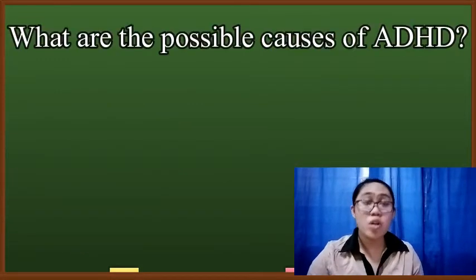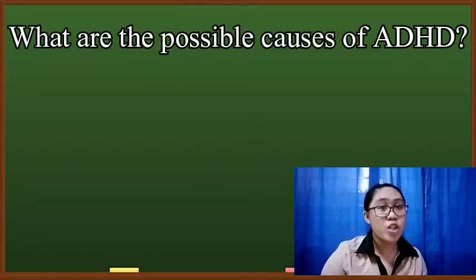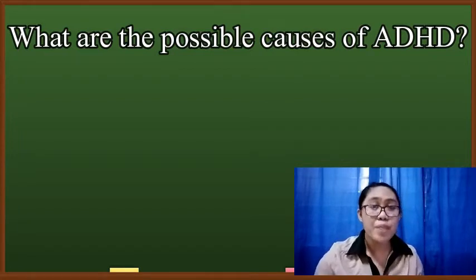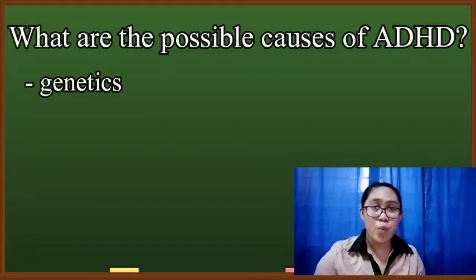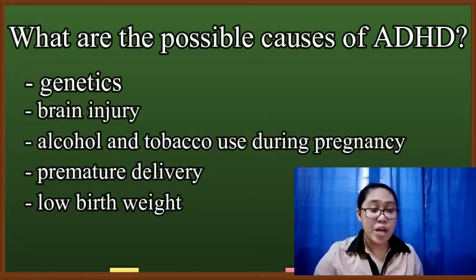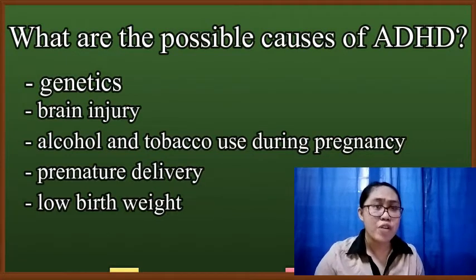What are the possible causes of ADHD? Scientists are studying causes and risk factors in an effort to find better ways to manage and reduce the chances of a person having ADHD. The causes and risk factors are unknown, but current studies and research show that genetics play an important role. In addition to genetics, scientists are also studying other possible causes including brain injury, exposure to lead during pregnancy or at a young age, alcohol and tobacco use during pregnancy, premature delivery, and low birth weight.